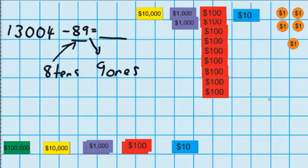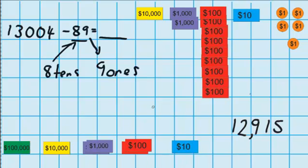Now I just need to work out what's left. I can see I've got 5 ones, 1 ten, 9 hundreds, 2 thousand-dollar notes, and 1 ten-thousand-dollar note. Which means I've got $12,915 left. So the answer to 13,004 minus 89 must be 12,915. Hopefully you've found this lesson helpful. For more lessons check out teachertools.co.nz.